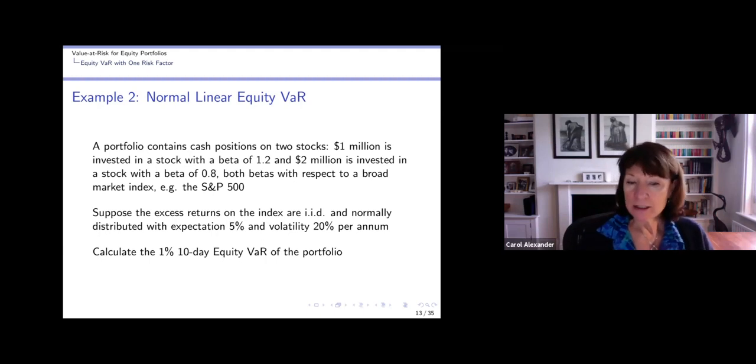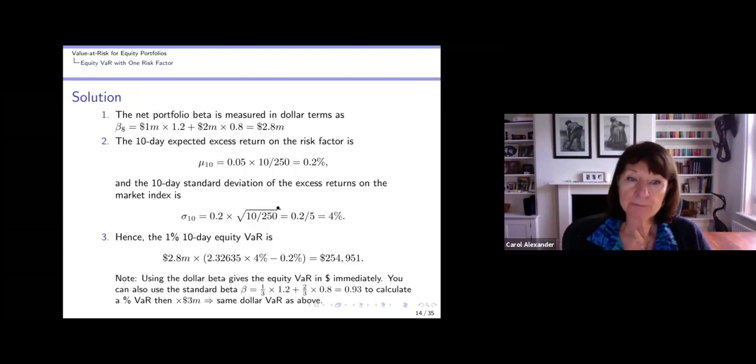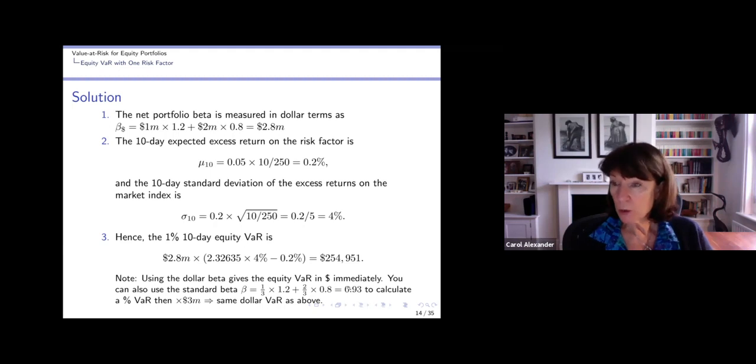Suppose the excess returns on the index are IID and normally distributed and the expectation per annum is 5% and the volatility is 20%. Calculate the 1% 10 day equity VaR of the portfolio. So the portfolio beta needs to be calculated first. And we know that that's the weighted sum of the stock betas. So we've got 1 million and 2 million, the total of 3 million invested. So the portfolio weights are one third and two thirds on the two different stocks. And so the beta is one third times 1.2 plus two thirds times 0.8. Once we get our portfolio beta, then we multiply that by the index VaR.